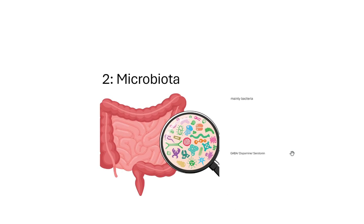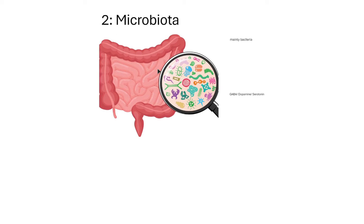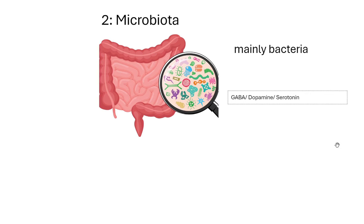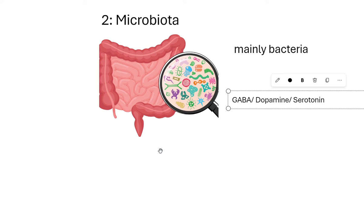Let's zoom in a bit and look at the second component of our GBA — the microbiota that resides in your gut. The microbiota refers to the thousands of different types of microorganisms that exist in our gut, mainly made up of bacteria — a mixture of good bacteria and also bad bacteria. The good bacteria in there plays a key role in the production of those neurotransmitters and neuromodulators, such as GABA, dopamine, and serotonin.